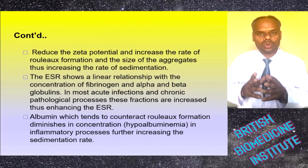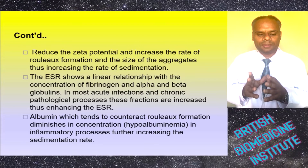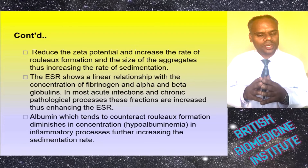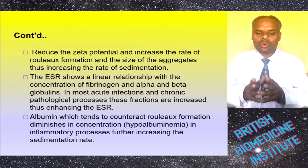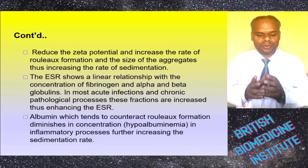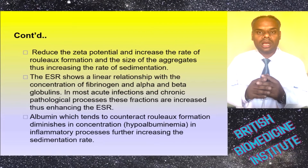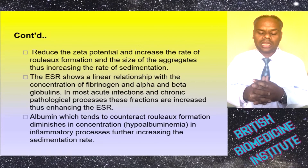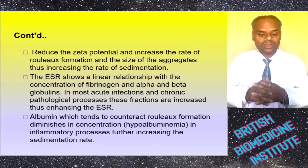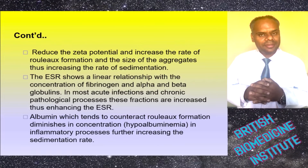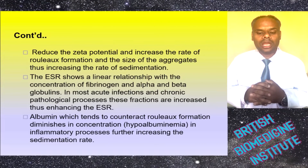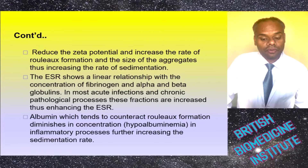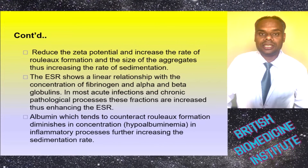ESR shows a linear relationship with the concentration of fibrinogen and alpha and beta globulins. In most acute infections and chronic pathological processes these fractions are increased, thus enhancing the ESR. Albumin tends to counteract rouleaux formation; its diminished concentration in hypoalbuminemia — which is part of the inflammatory process — further increases the sedimentation rate.